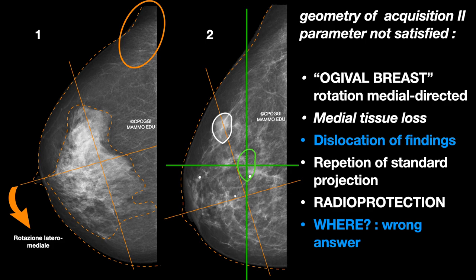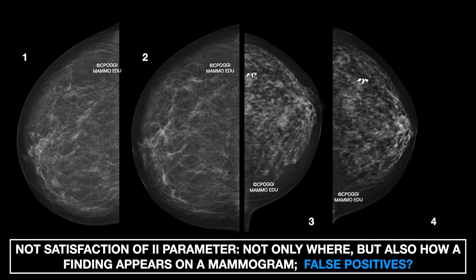Again, image one: second parameter not satisfied, with medial rotation. The first parameter is also not satisfied — the nipple is not in profile. That appears, but it is real. Repetition in image two, more correct: the same finding seems less worrying. So, the correct position not only answers the question 'where' but also the question 'how'.